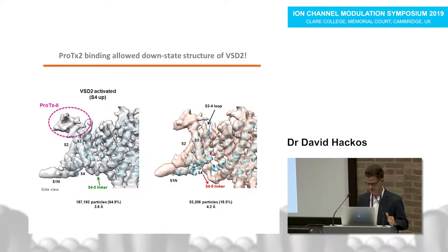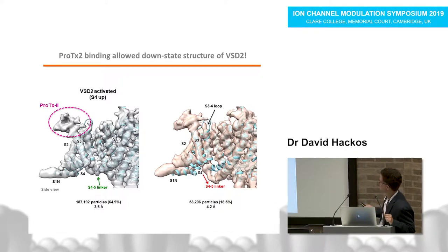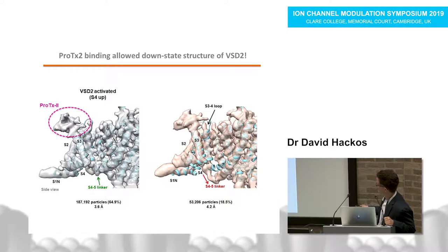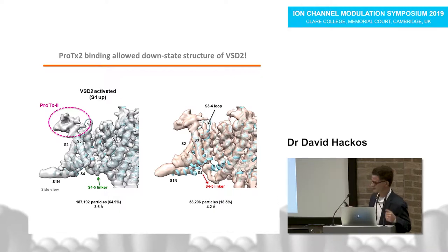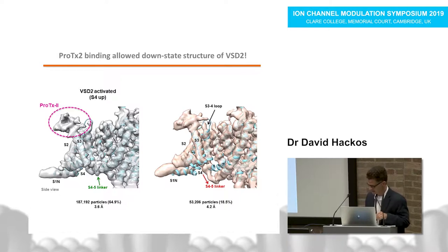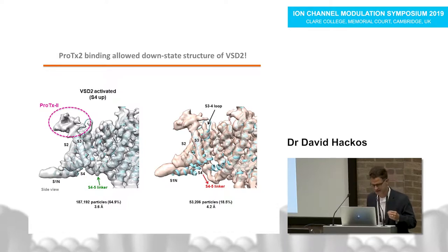We decided to solve structures by cryo-electron microscopy to avoid lattice constraints that might prevent us from seeing down-state structures. We solved the same protein but using cryo-EM without a lattice. The cryo-EM structure aligns perfectly with the refined crystal structure model, and ProTx2 is visible on the surface of the voltage sensor. However, this up-state structure was present in only about 65% of the particles examined by cryo-EM; many particles showed a distinctly different structure.